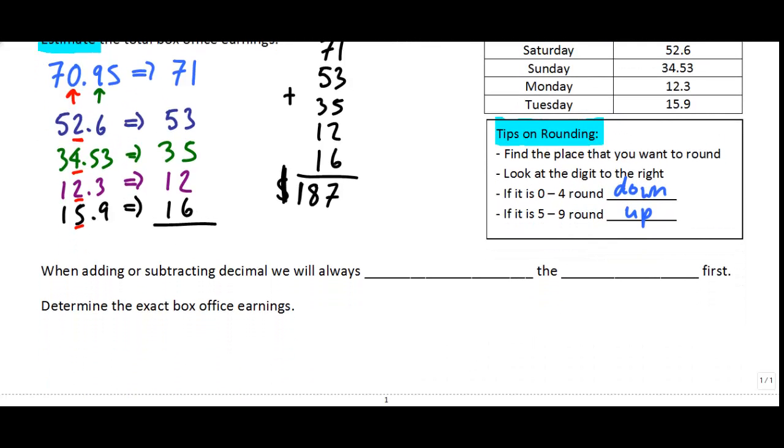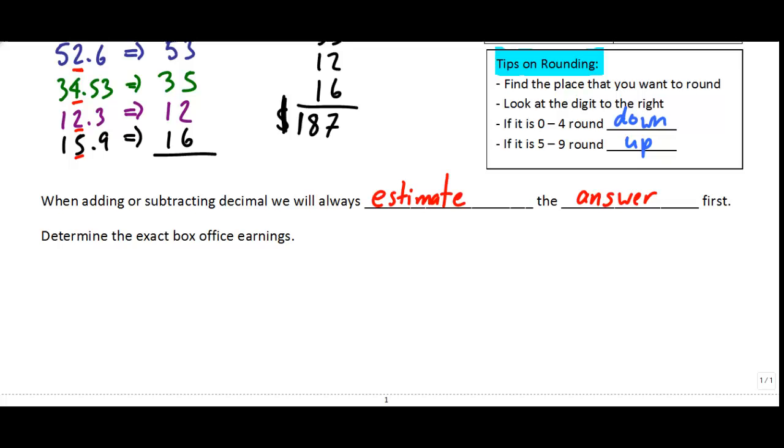Now whenever we do adding or subtracting, or you will see later multiplying and dividing, we're always, always, always going to estimate the answer first. And it's really important we do that because estimating lets us know if we're anywhere near the right answer. And it's pretty easy to do. It only takes a couple of seconds.